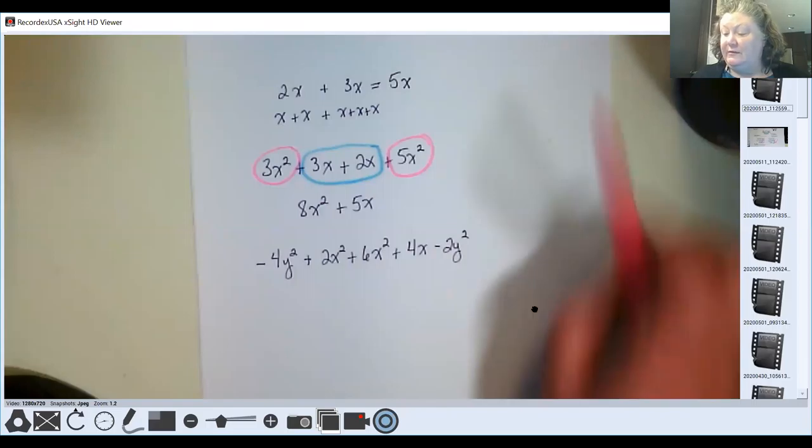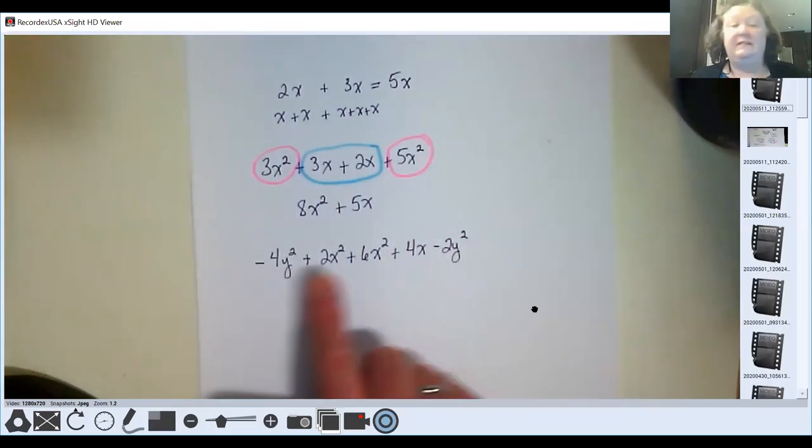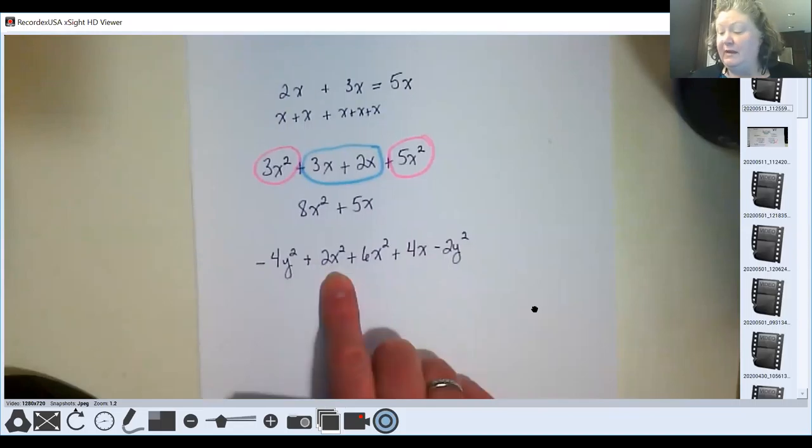So this is interesting because this is Y squared and this is X squared, and they both have that variable raised to the second power. But this is a Y and this is an X, so they are not like terms.